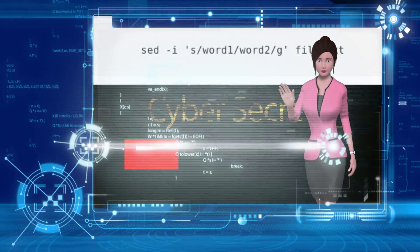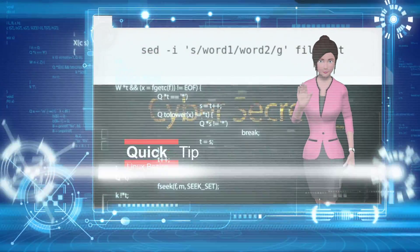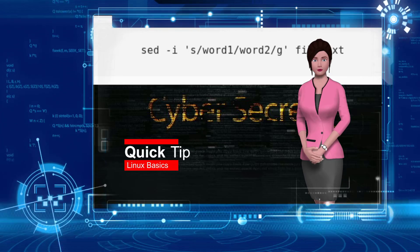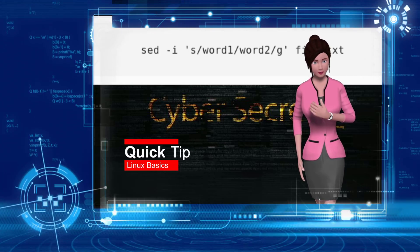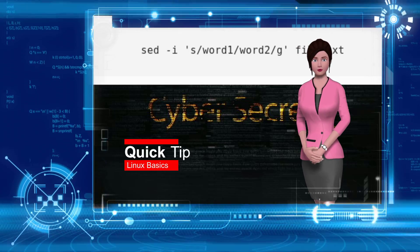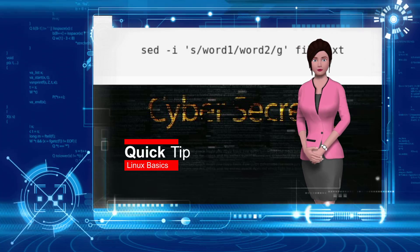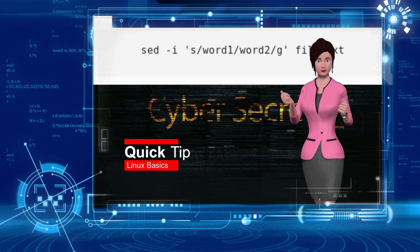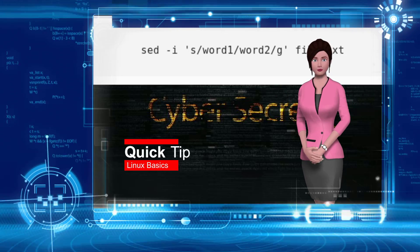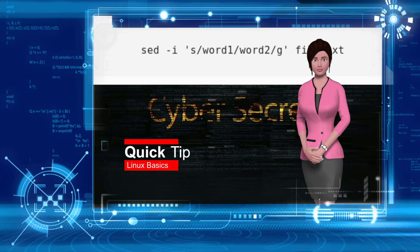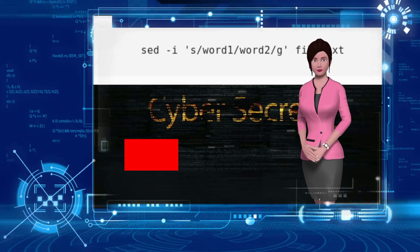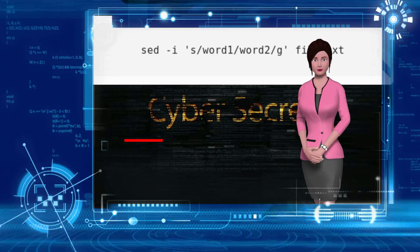Linux quick tip, CyberSecrets style. If you are using Linux and want to change a keyword inside of a file, use the sed command. This can be useful if you are trying to sanitize a document or just replace a specific word. For example: sed -i 's/word1/word2/g' file.txt. Now you can view the file to see your new changes. Enjoy!